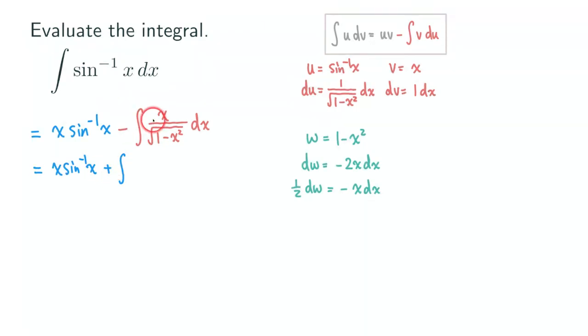So that negative x with the dx is changed to 1 half dw. So we are going to put 1 half and then dw right here. What do we have at the bottom? The bottom would actually just be square root of 1 minus x squared, but 1 minus x squared is w. So it will be the square root of just w.